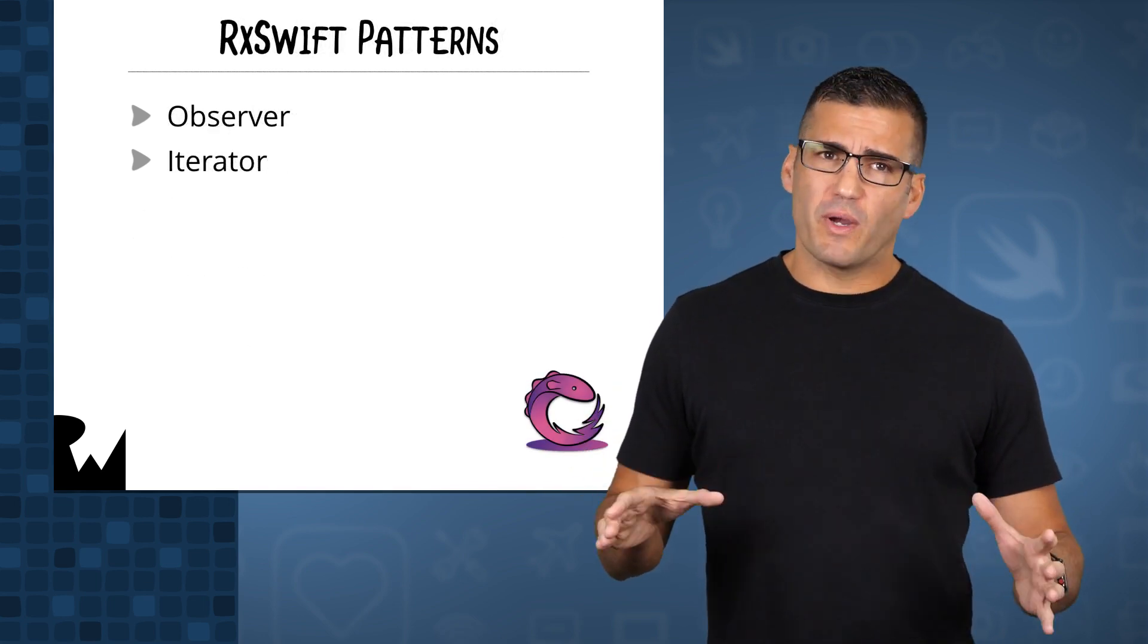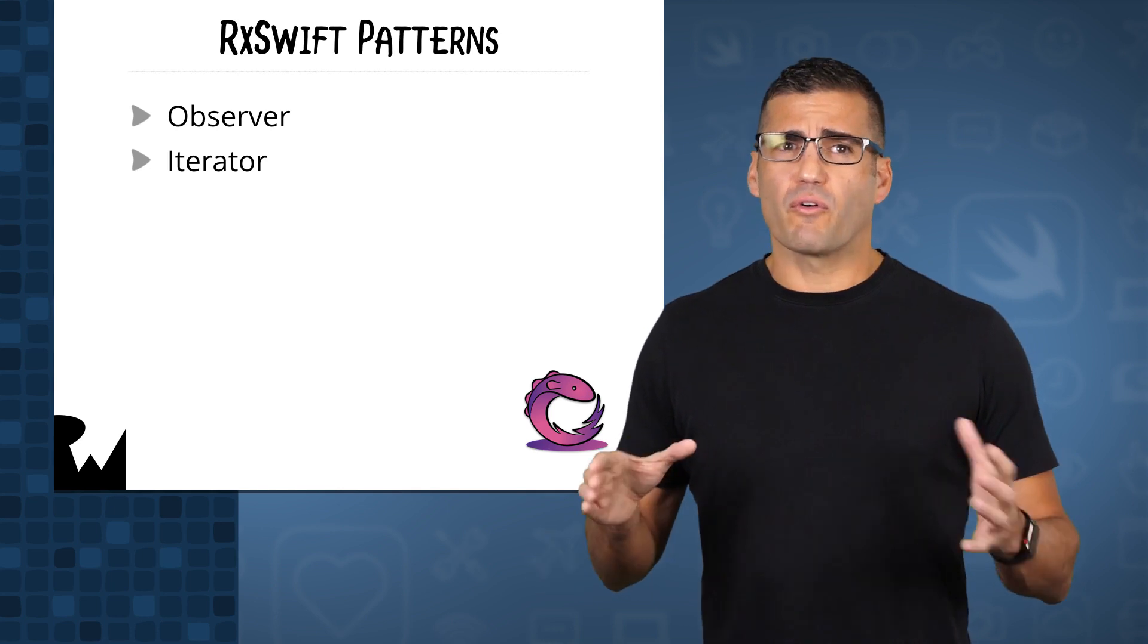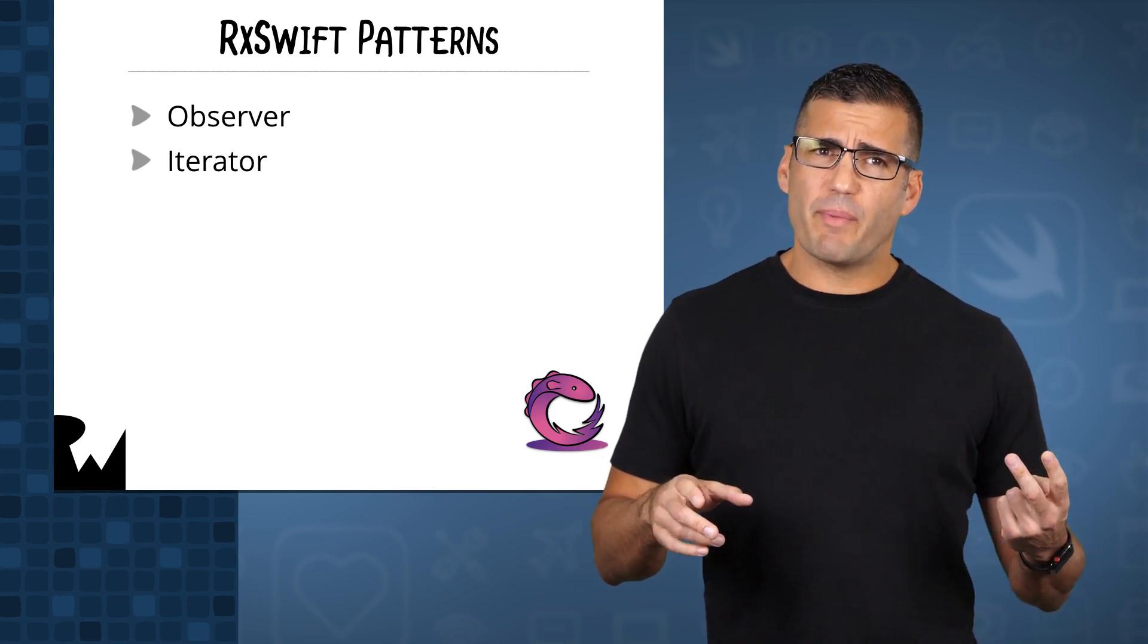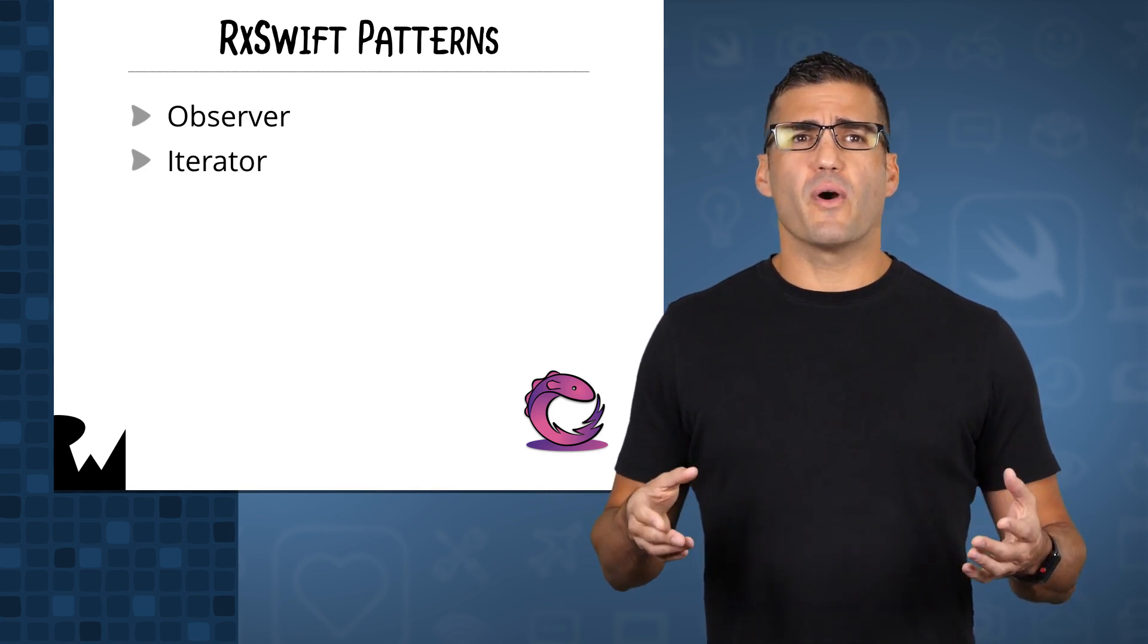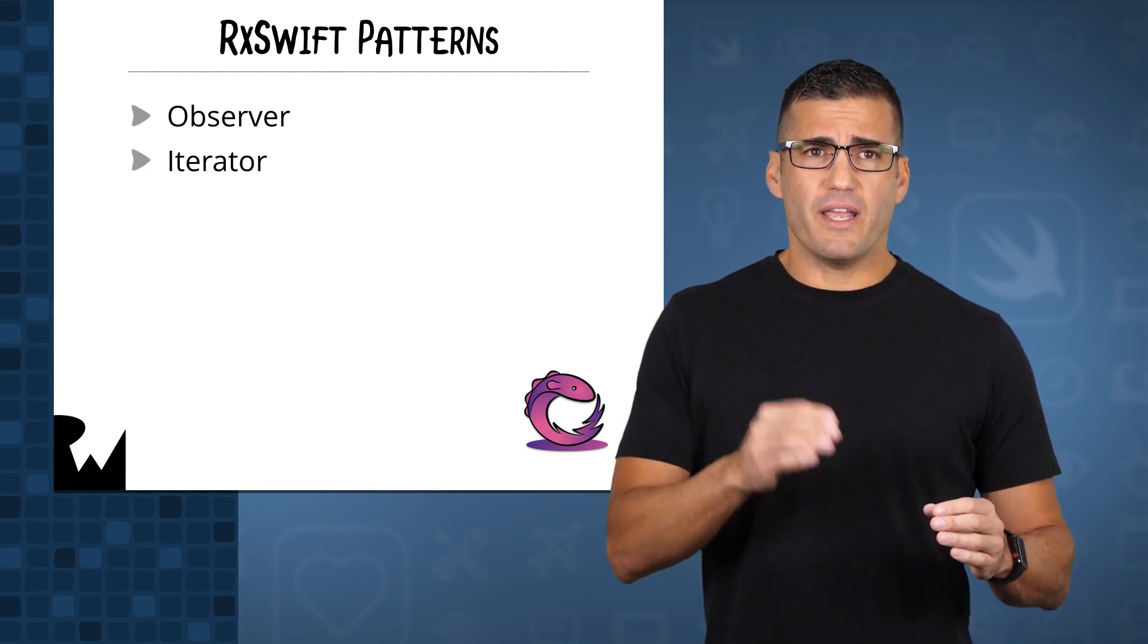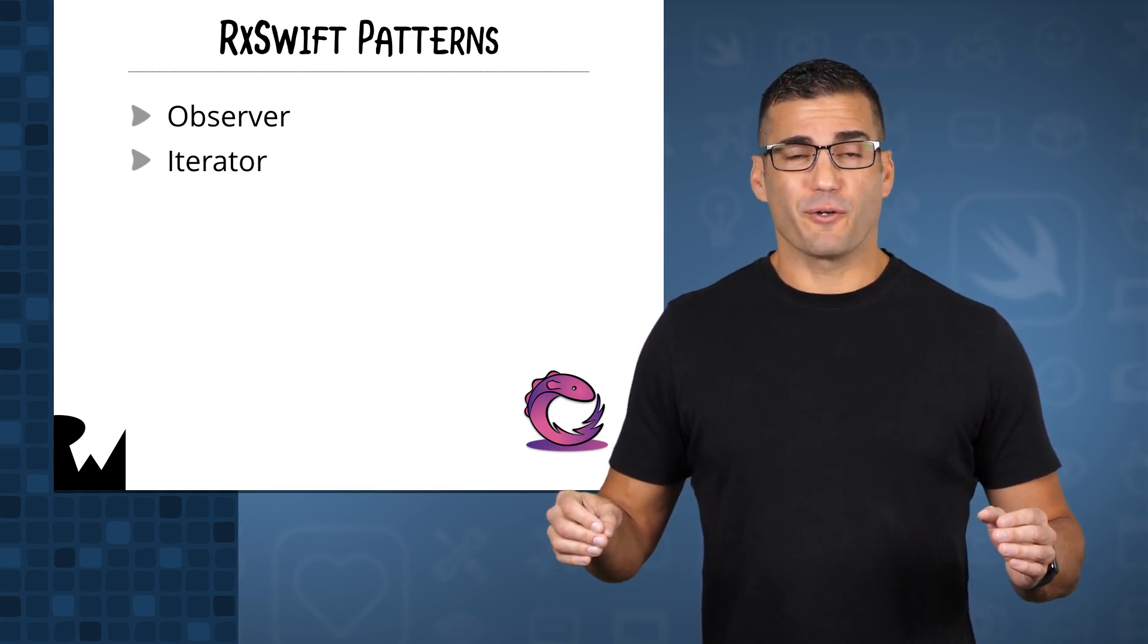Now, all that being said, RxSwift, really ReactiveX overall, is based on two primary patterns. Observer and Iterator. You're going to create observable sequences and iterate over them in a reactive manner. A lot.